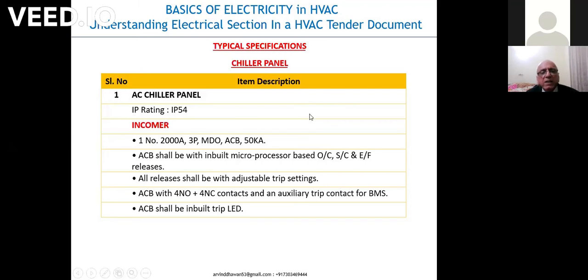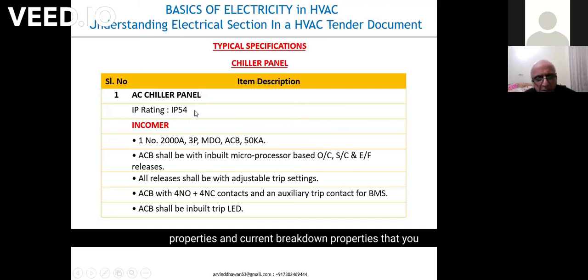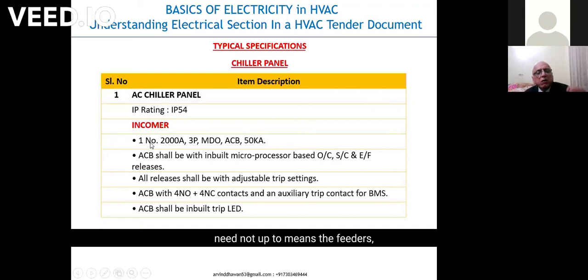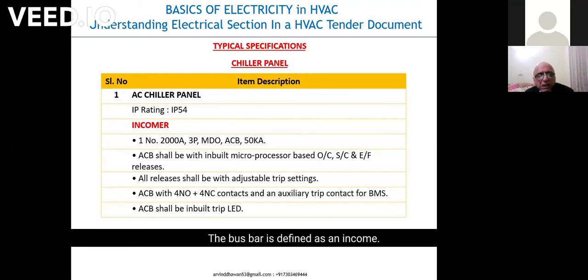So these are IP ratings — ratings regarding installation properties and current breakdown properties. That's for the electrical engineer. Incomer means the feeders, the cables coming into the panel. The bus bar is defined as an incomer. It's not a cable, not a wire. It's an incomer — incomer means it's a bus bar.